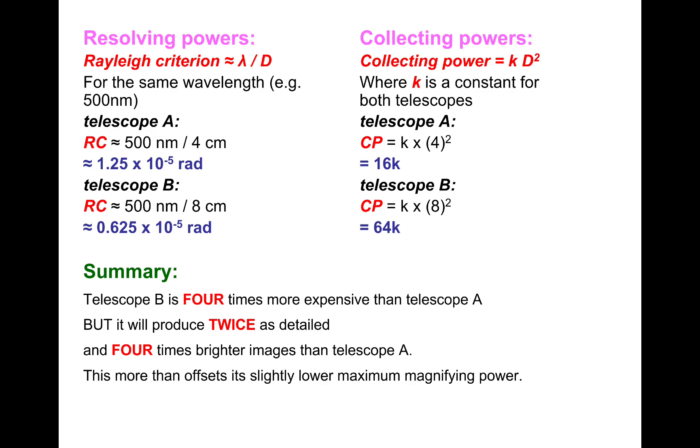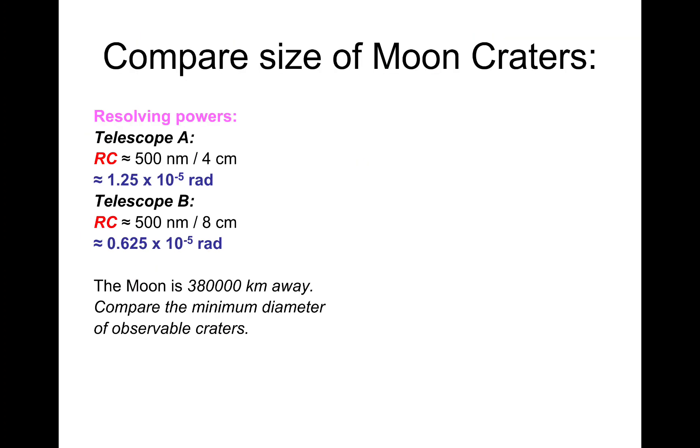I want to do one more, which is a recap of something we've done in the previous lesson. So I want to compare the size of moon craters. We've got the resolving powers from the previous question. So we've got Telescope A and Telescope B. The moon is 380,000 kilometers away, or 3.8 times 10 to the 8 meters. Let's compare the minimum diameter of observable craters.